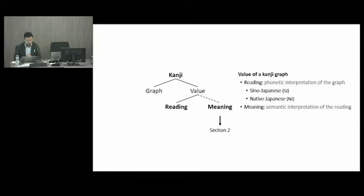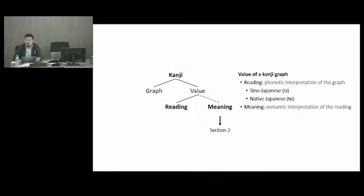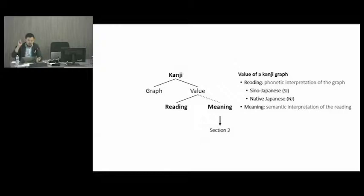Let's shift our focus to kanji, which is the main subject of this presentation. Kanji graphs function as signs, which means they have their own values. In the literature, these values are considered to have two elements. The first one is conventionally known as the reading, or the phonetic interpretation of the graph in question. The other element is the meaning, the semantic interpretation of the reading. However, in some kanji graphs, the meaning is quite obscure or even non-existent, which is why it is connected to the value node using a dotted line.